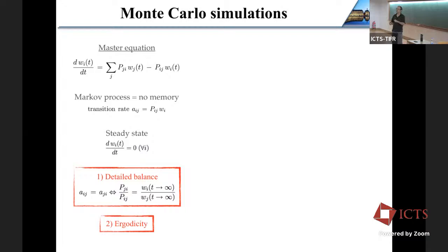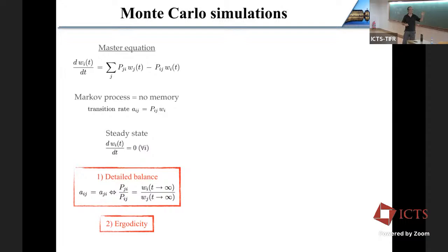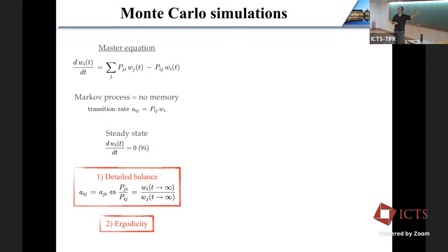The second important point is ergodicity. If you have a system that respects detailed balance but gets stuck in a small region of Gibbs space and cannot explore the whole system, it will fail because you'll be biased to a small region. In classical systems, it's usually less problematic but you still have to be careful. In quantum systems, it can be dramatic — you can be stuck without any off-diagonal terms allowing you to reach another part of Hilbert space. For classical simulations, this is most of the time not a problem, but keep it in mind. Once you have these two rules imposed — detailed balance and ergodicity — you can do Monte Carlo simulations.